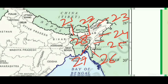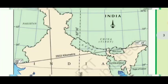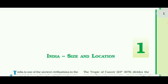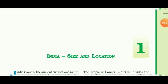In this way we learned the location of all 28 states and 8 Union territories. We have now completed our first chapter — India: Size and Location. If you didn't watch my first and second part of the video, I have shared the links in the description. Goodbye!